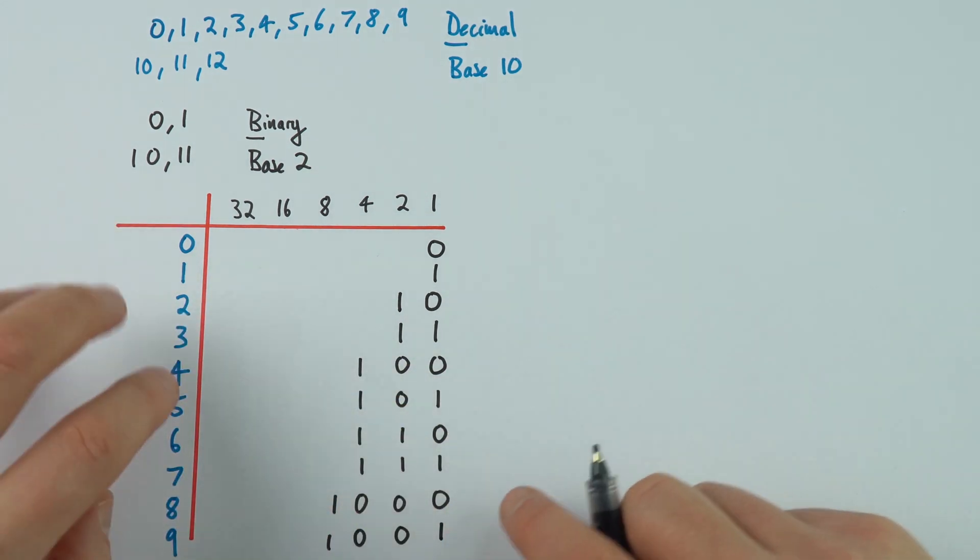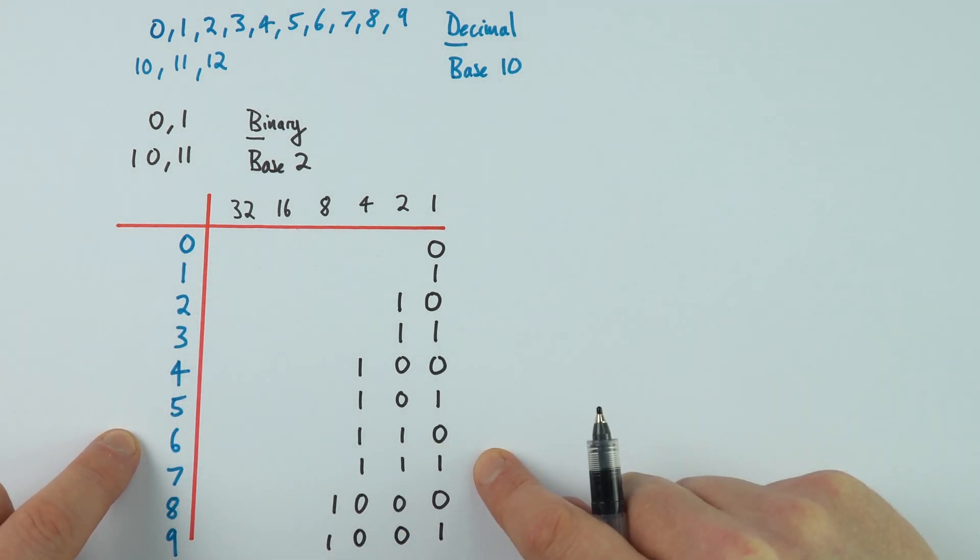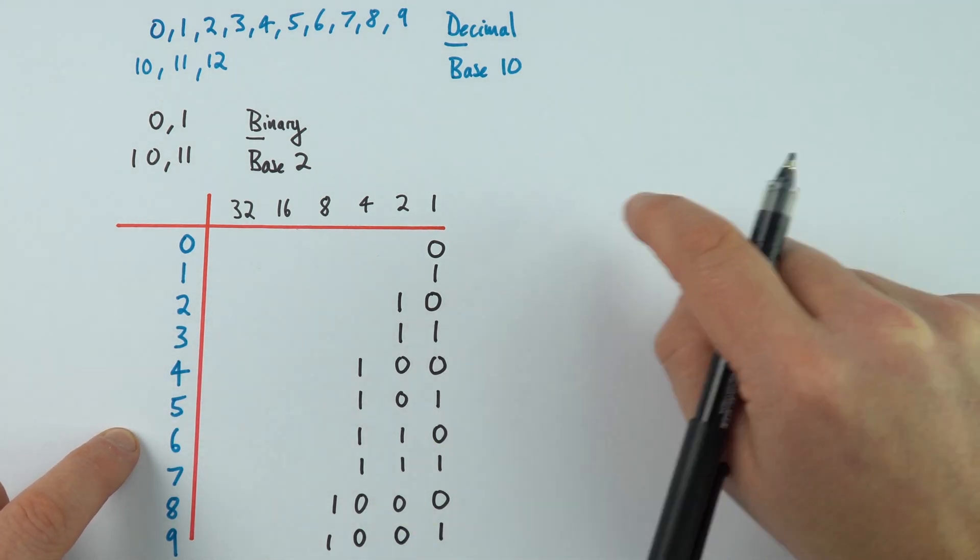So I've just got a few of the different values here. So this is the decimal number that we're used to, and this is how we represent it, just using a 0 or a 1.